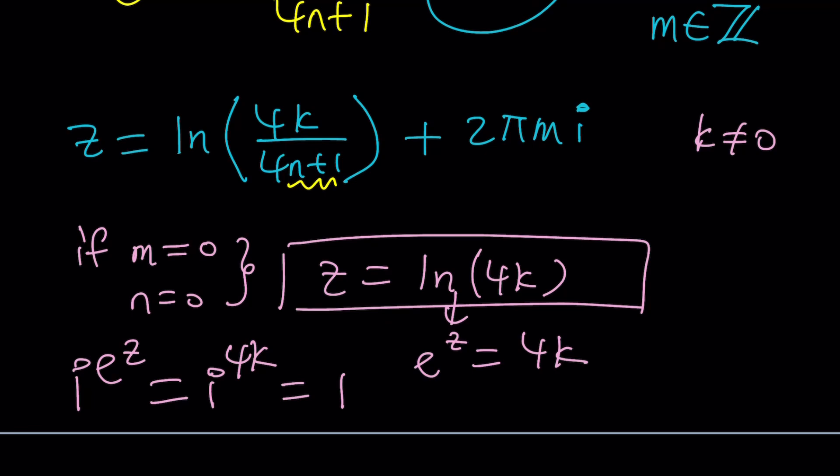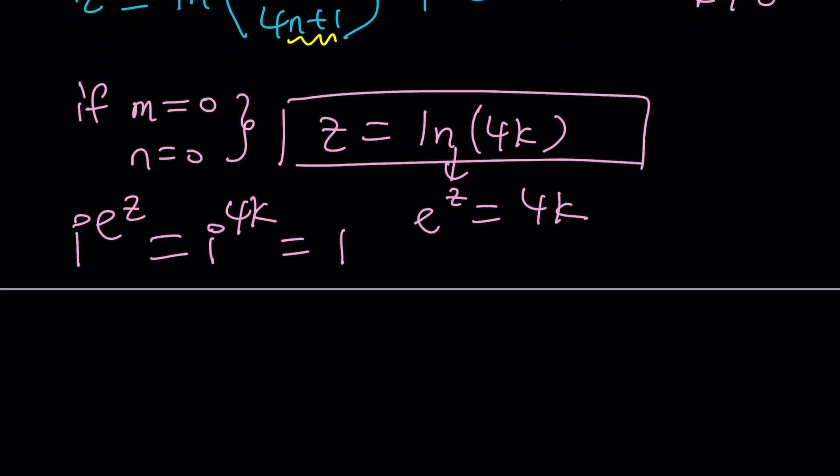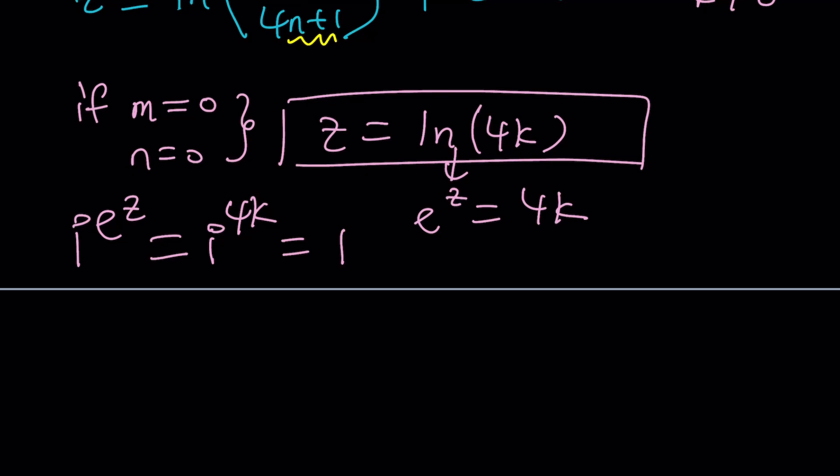But here's the million dollar question: some people argue that there shouldn't be a 4n plus 1 in the denominator, it should just be 1. Let's find out, or at least take a look. What if n is not 0? Let's say n is equal to 1 and k is equal to 1. Then z is going to be ln 4 over 5.